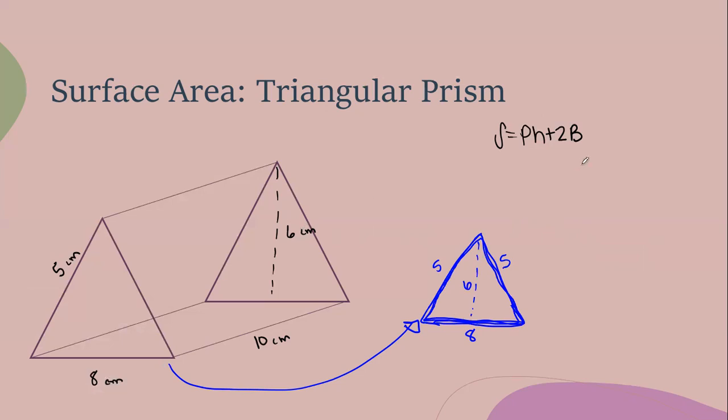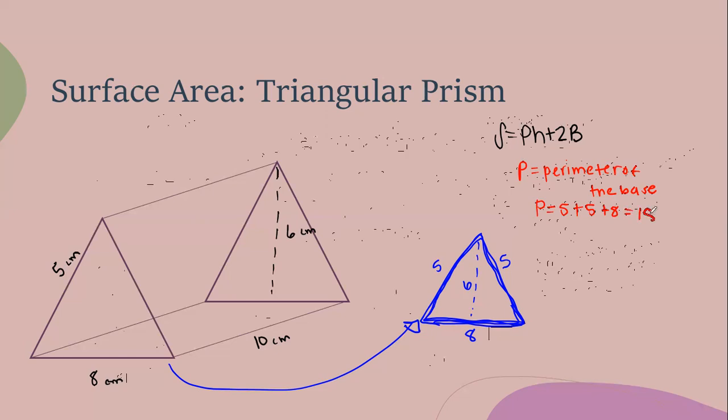So let's start with the capital P first, which is the perimeter of the base. I'm only looking at what I drew out. How would I find the perimeter of the base? And what are my sides? 5, 5, and 8. Awesome. So 5 plus 5 plus 8, and it's 18. Let me pause, because triangular prisms is the one we struggle with the most. Anyone questioning why the perimeter of the base is 18?